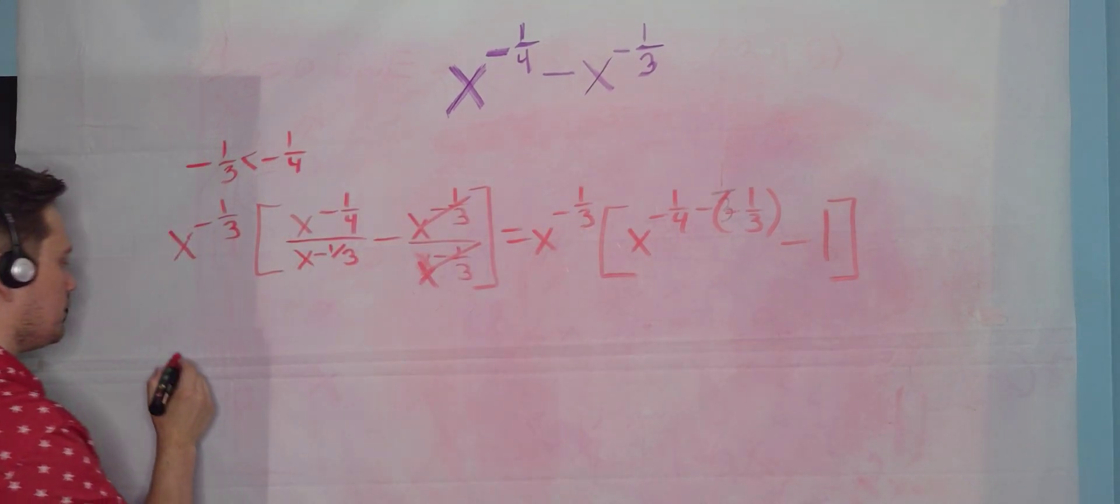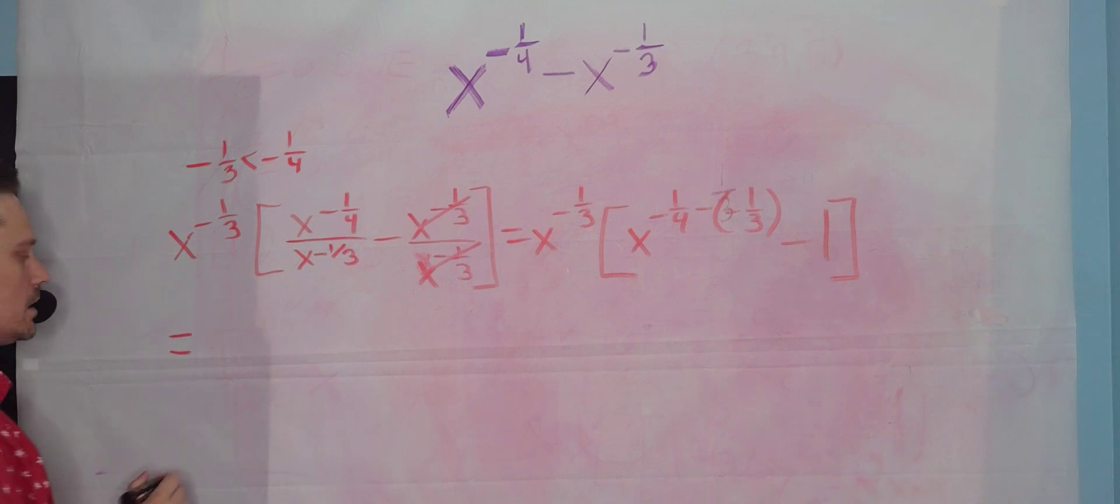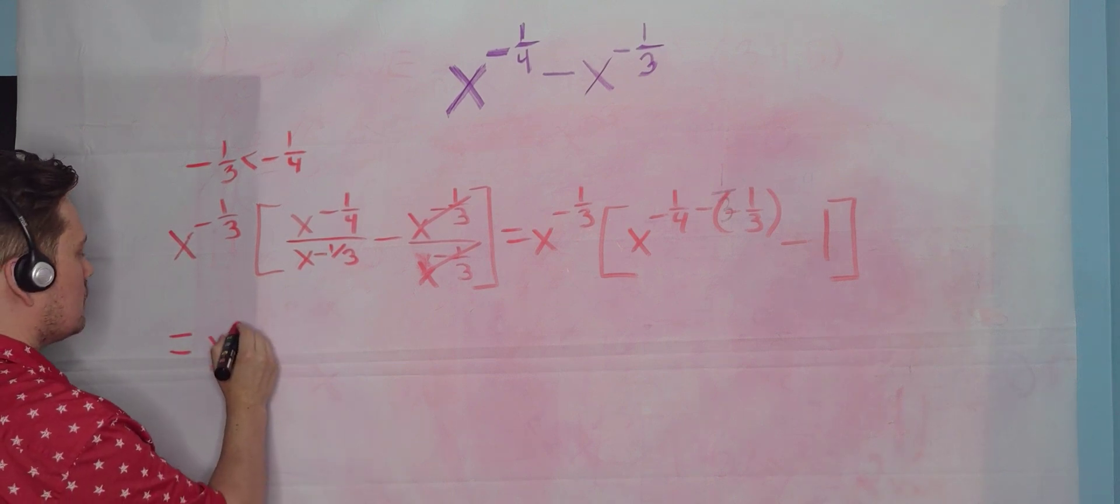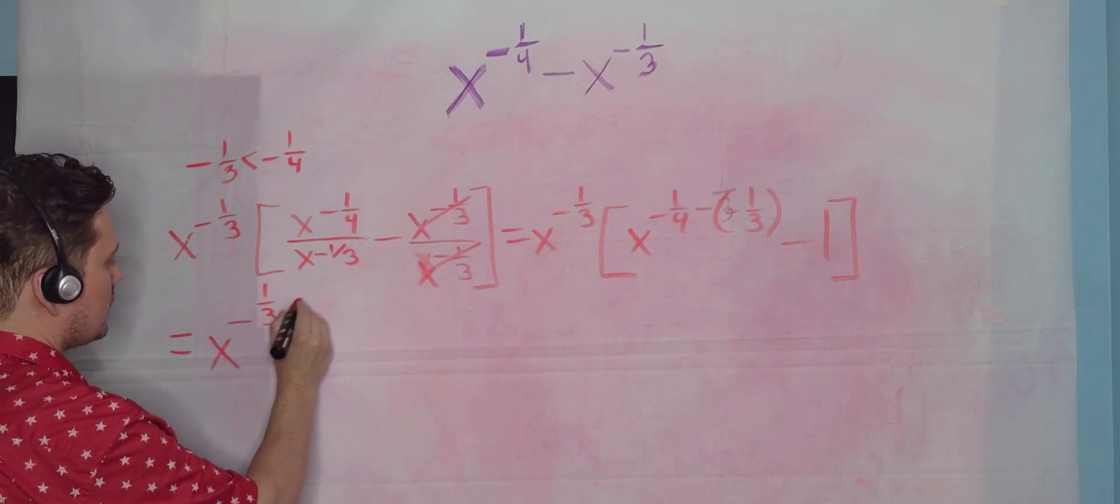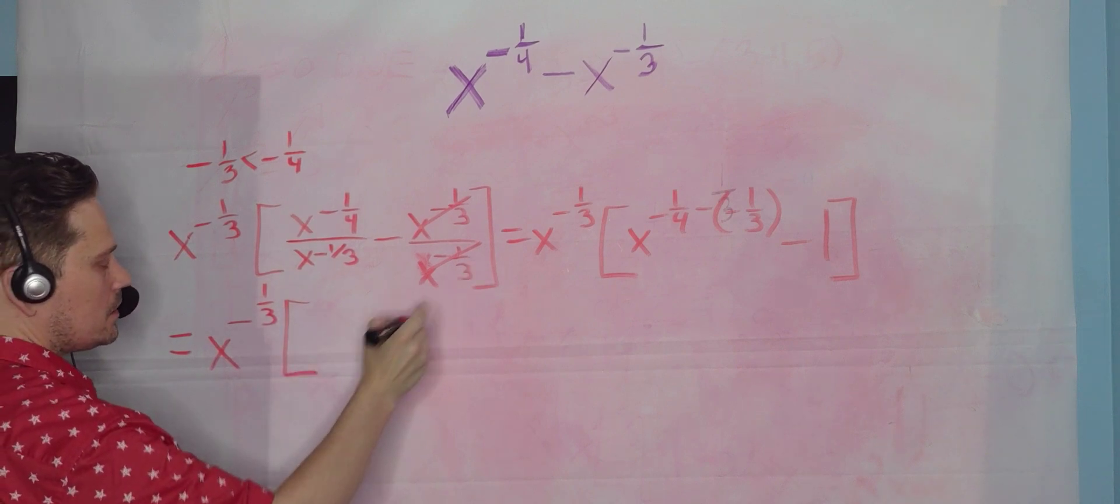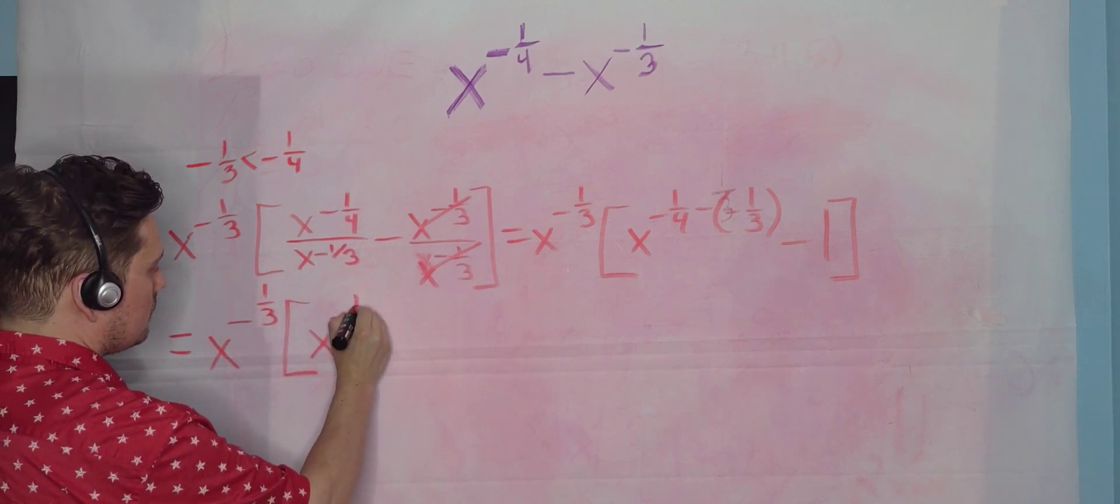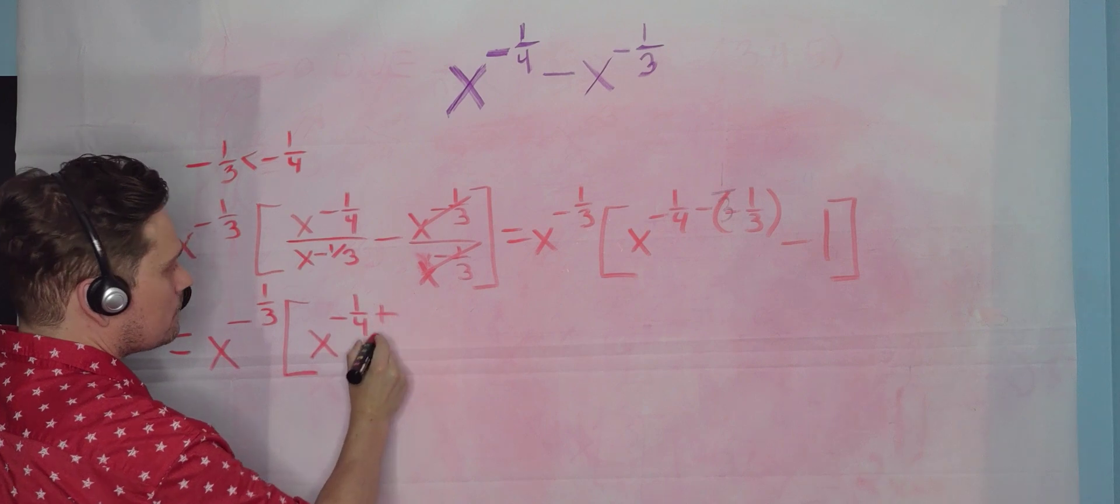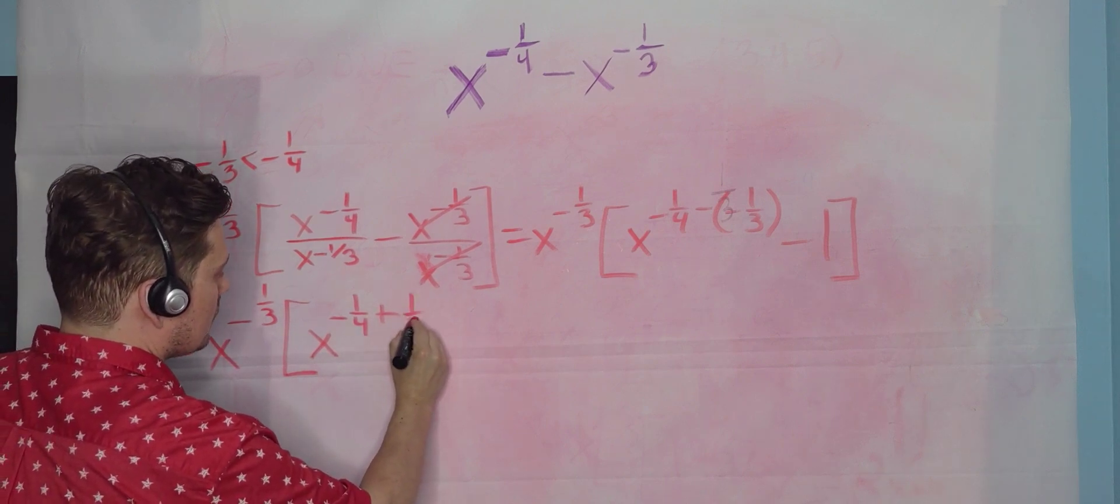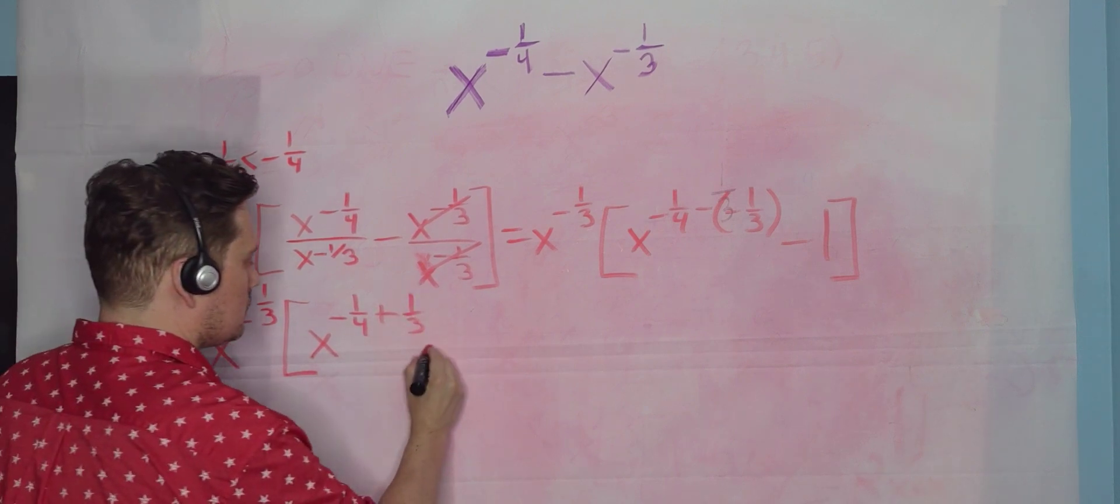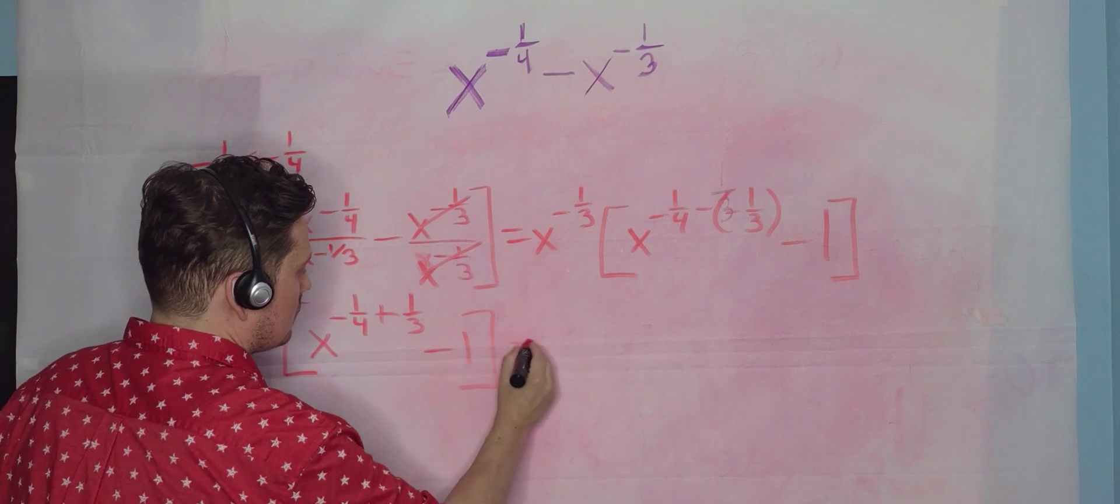And then you continue over here. So you're going to have x raised to the negative one-third, bracket. Now you have to work on x to the negative one-fourth plus one-third minus one. And then you continue working on this. So now you have to work on the fractions.